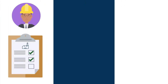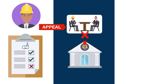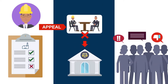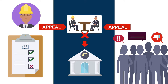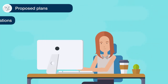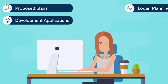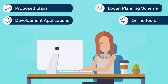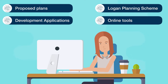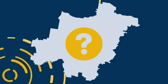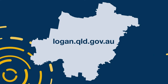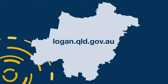If a developer does not agree with a decision about their application, they can appeal it. Other people who have submitted their concerns during the public consultation phase can appeal a decision too. There are many ways you can access information about development happening in Logan. If you want to know more about how things work, visit the Logan City Council website.